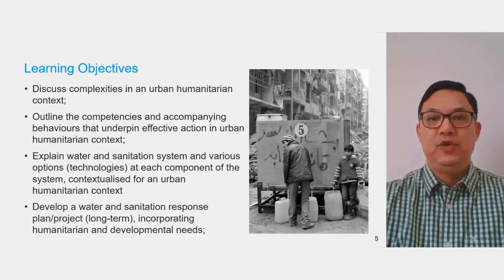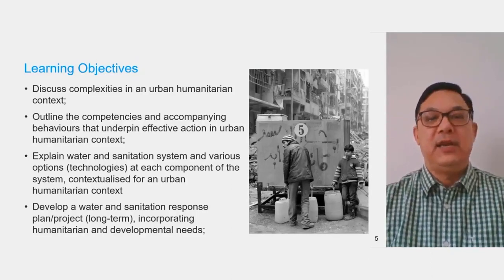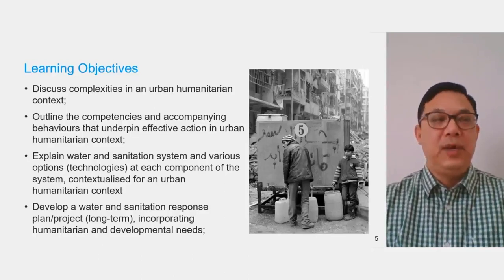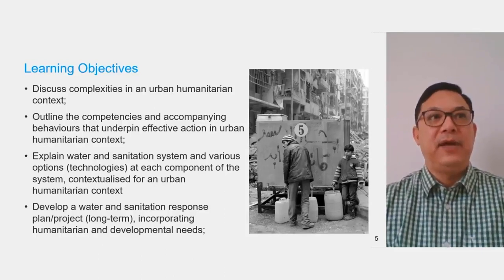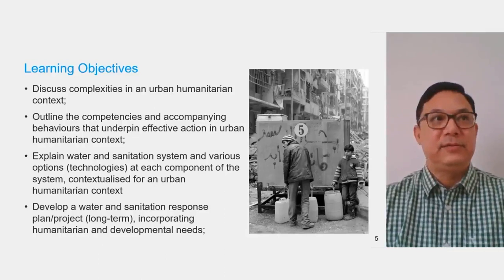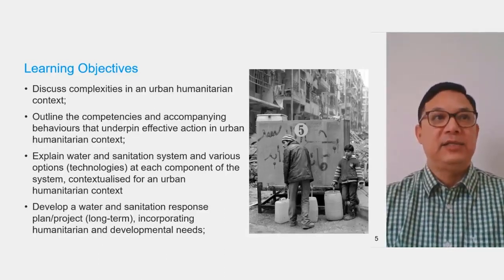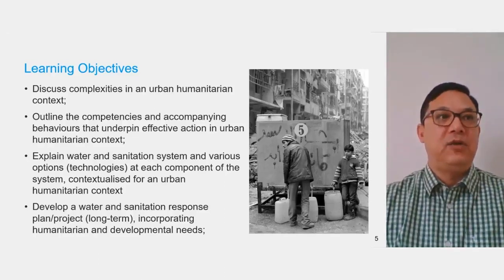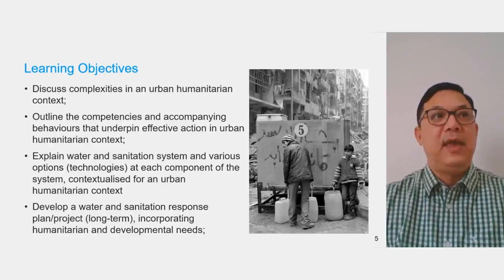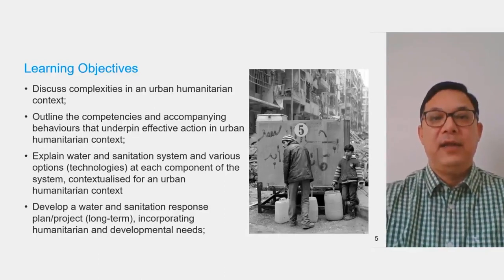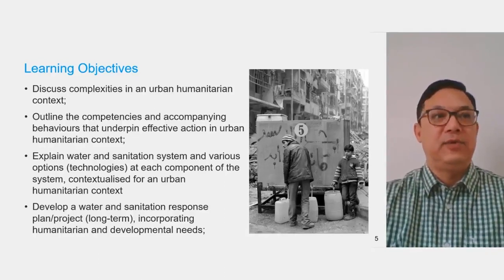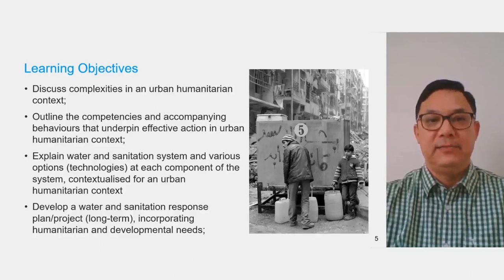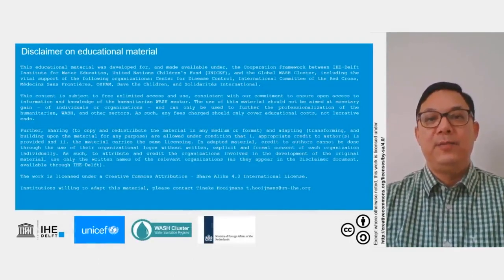After completing the course, you should be able to discuss complexities in an urban-humanitarian context, outline the competencies and accompanying behaviours that underpin effective action in urban-humanitarian contexts, and explain water and sanitation systems and various options and technologies at each component of the system, contextualised for an urban-humanitarian context. Finally, you should be able to develop a Water and Sanitation Response Plan — long-term — incorporating humanitarian and developmental needs. Thank you, and I hope that you enjoy the course.